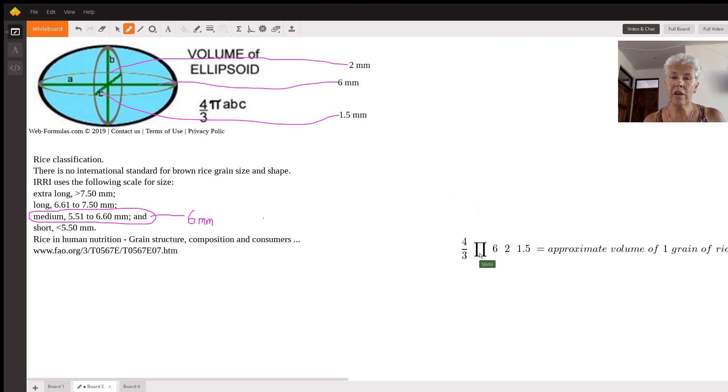Therefore as a final equation to get the approximate volume of one grain of rice I'm going to use four thirds times pi times six millimeters times two millimeters times one point five millimeters. Okay something important to realize about Wyzant's videos here is that they limit them to five minutes so we're going to whip through the math on the next board.